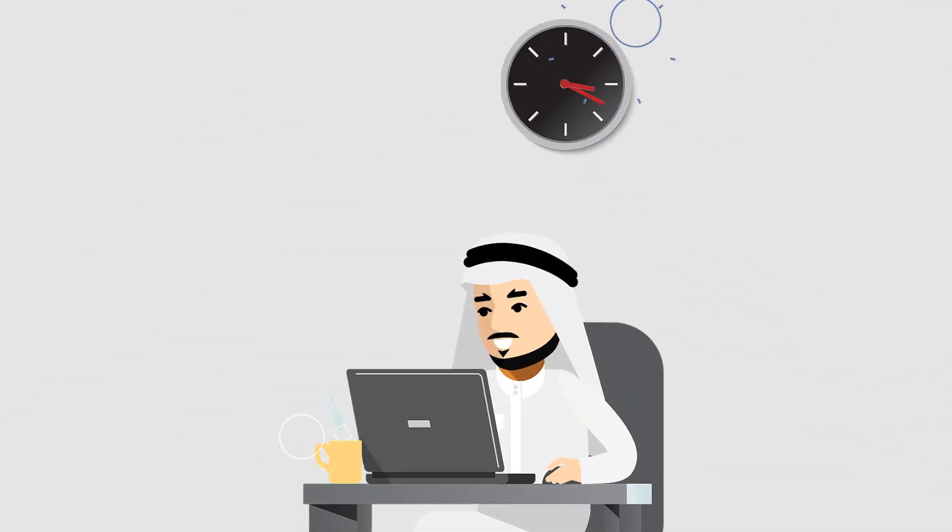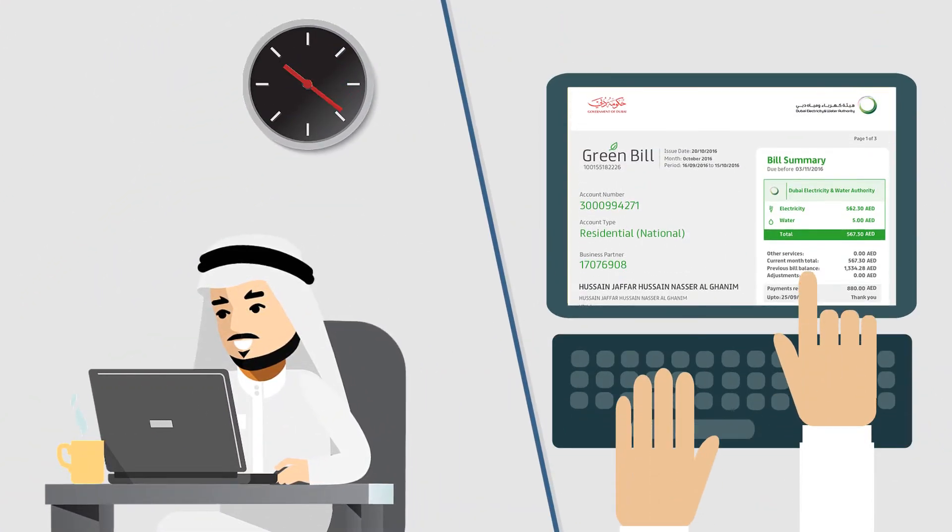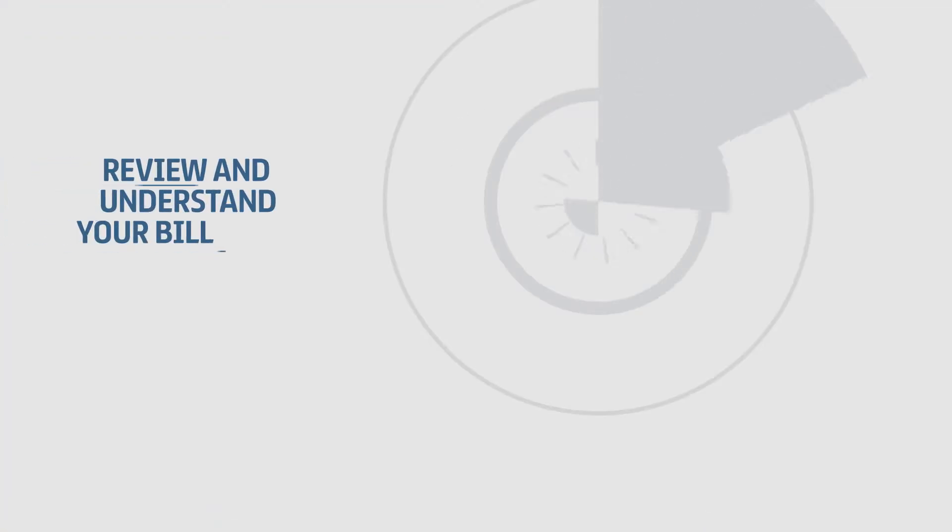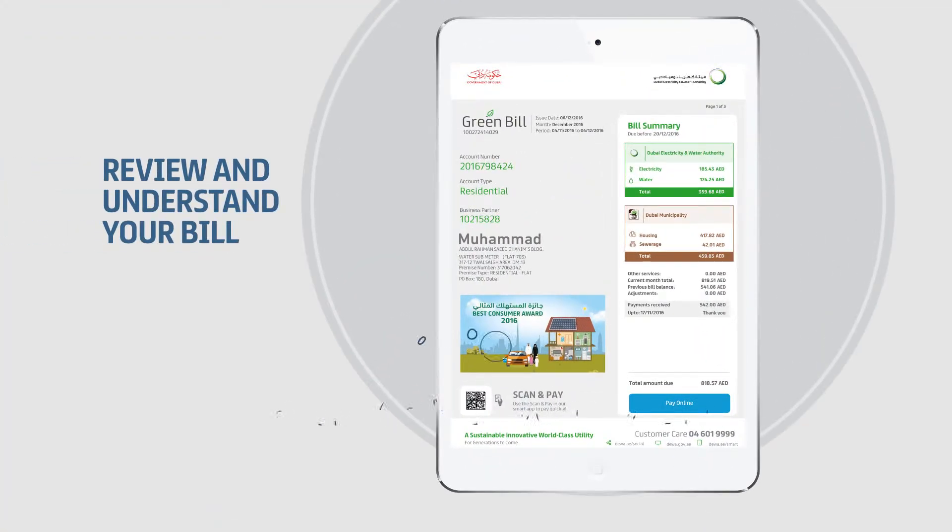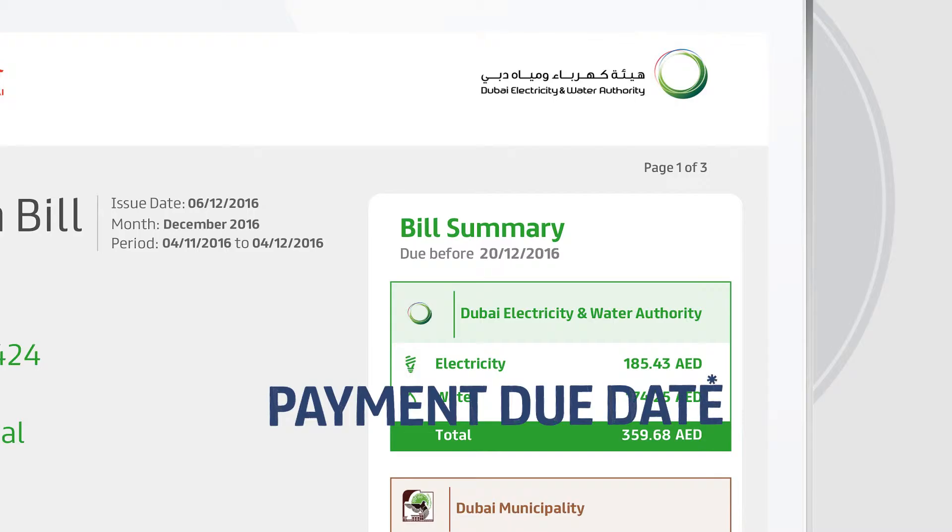The first thing you will always need to check is your green bill. It comes to you every month and has many important details, such as your payment due date.